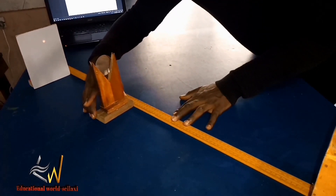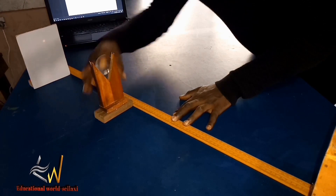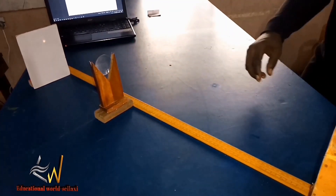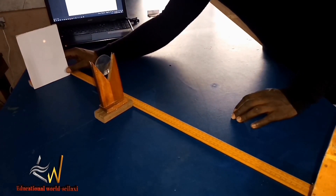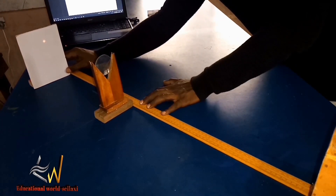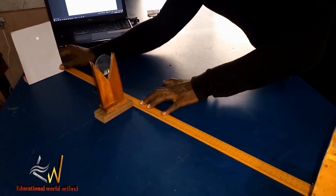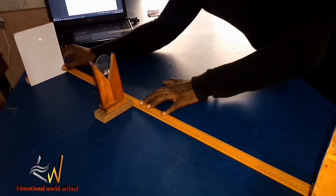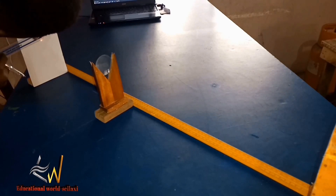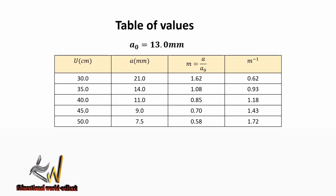Lastly, we adjust the position of the lens and lens holder to a distance of 50 cm from the ray box, and adjust the position of the screen such that a clear image is formed. We then measure the size of the image formed — it's a very simple practical, one of the simplest. The value is 7.5 mm. In our table of values, when U is 50.0 cm, A is 7.5 mm. The magnification is 0.58 and the inverse of magnification is 1.72.